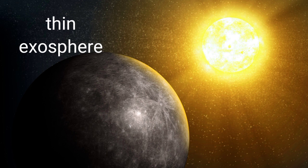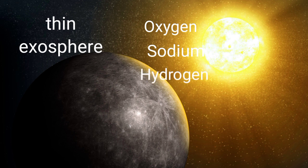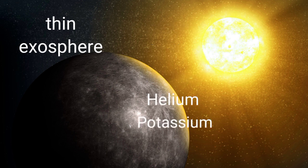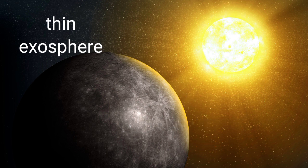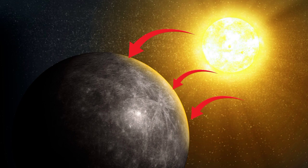This exosphere is made of oxygen, sodium, hydrogen, helium, and potassium, all whipped up from the planet's surface by solar winds.